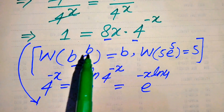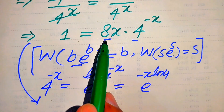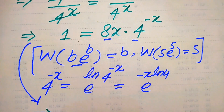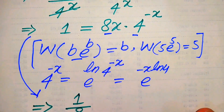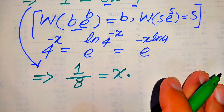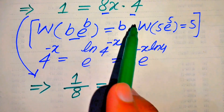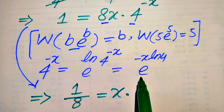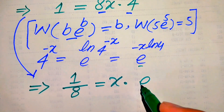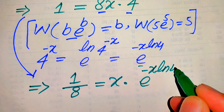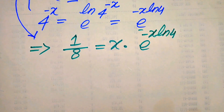We move the 8 to the left-hand side — since it is multiplied on the right, it becomes divided on the left — giving 1/8 equals x times 4^(-x). We now replace 4^(-x) with its exponential form, so the equation becomes 1/8 = x · e^(-x · log 4).